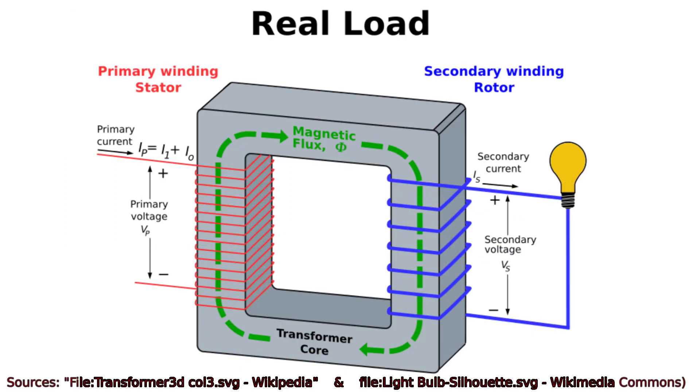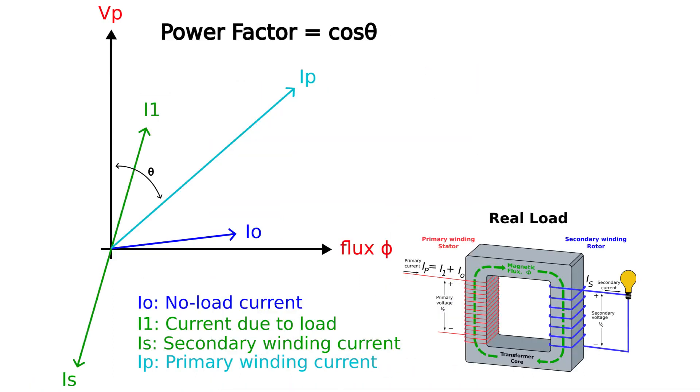However, once the load on the rotor increases, we're doing real work. We're exerting a mechanical power on the load, and mechanical power is real power. It's measured in watts, as opposed to imaginary power, which is measured in volt amperes. And in a transformer, the primary winding current vector, or phasor, is the vector sum of the no-load current vector IO and the resulting current vector IL due to the load current vector IS.